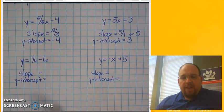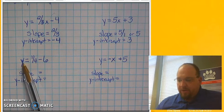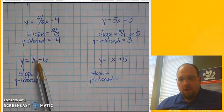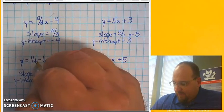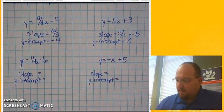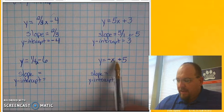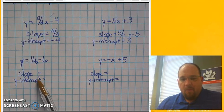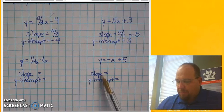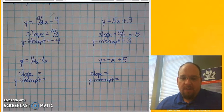We've done two practice problems. Let's go ahead and try to do two problems on our own. The first problem you're going to try to do on your own is y equals 1/4 x minus 6. And then the other problem you're going to try to do is y equals negative x plus 5. What I want you to do is identify the slope and the y intercept for each of these problems. Go ahead and do that now. Would you please pause your video, and when you're ready, you can unpause it.